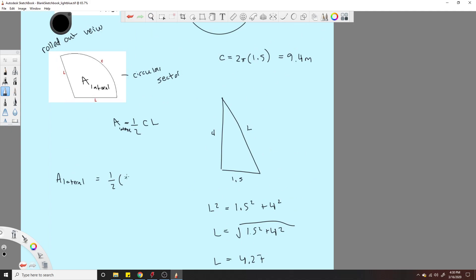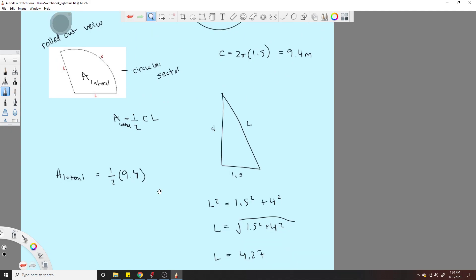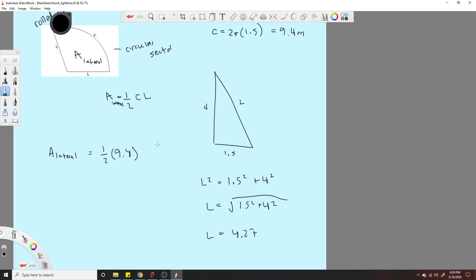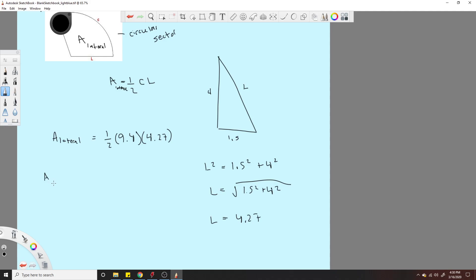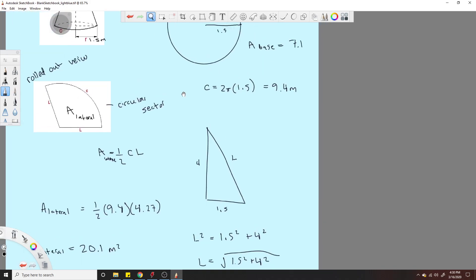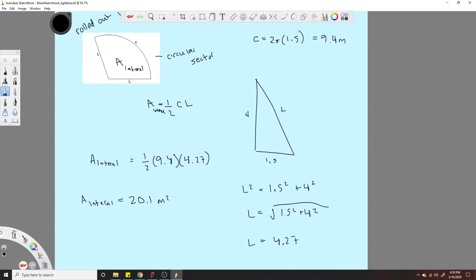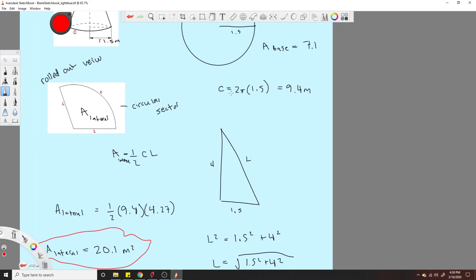And the slant length or length, which is 4.27. And that would give you 20.1 meters squared. So now we have our A lateral. Have our A lateral. We have our A base.